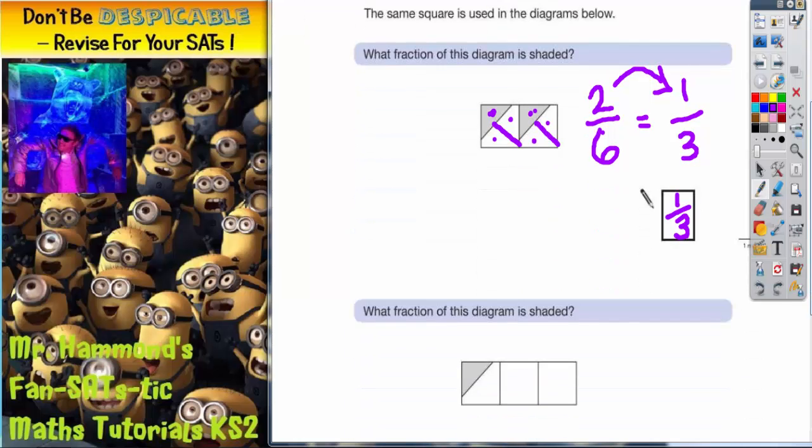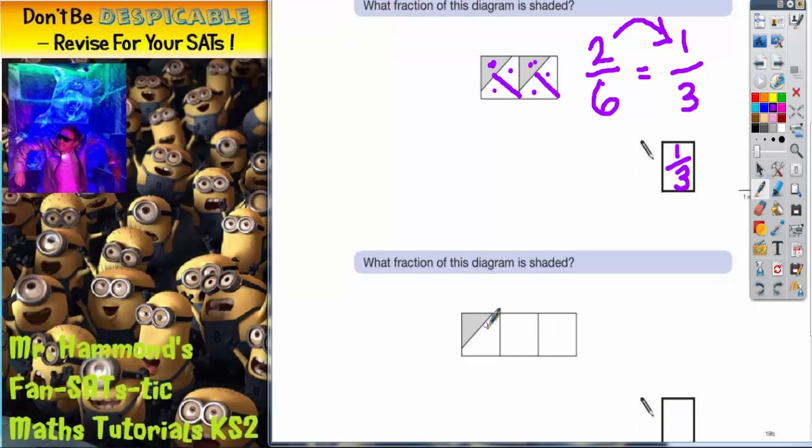If we scroll down here, we want to know what fraction of this diagram is shaded. Well, none of these squares are shaded, and we've got one third of this square shaded. If we take the same method as here and split our shapes into three, try to do them equally,